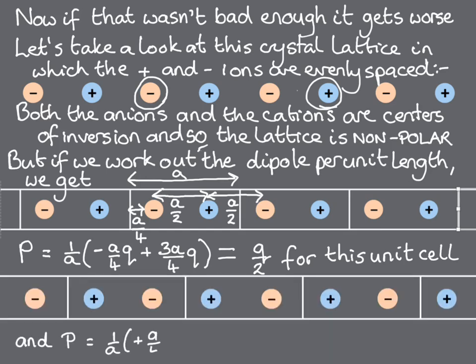And P is equal to 1 over a times (plus a over 4 times q, plus minus 3a over 4 times q), which equals minus q over 2 for this one. This is different from the first value that we calculated by q.